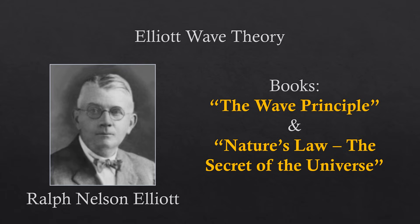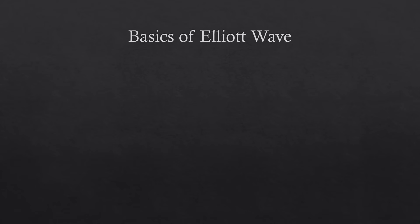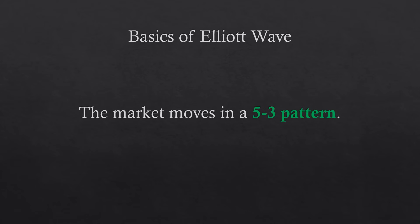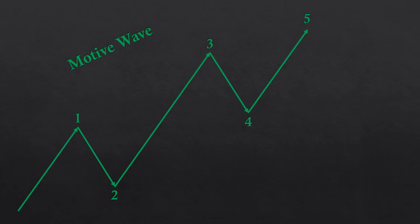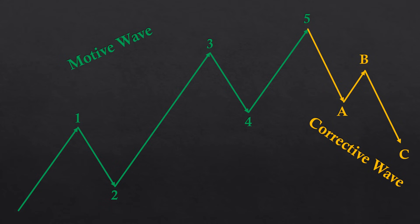The Elliott Wave Theory is grounded on a very basic assumption, which is that the market moves in a 5-3 wave pattern. In other words, the market advances for five waves and then retraces or corrects for three waves. This is the central idea from which all the rules and guidelines of the Elliott Wave Theory come from. The five waves that advance price collectively form one motive wave, labeled from 1 to 5. The three waves that retrace form one corrective wave, labeled from A to C.